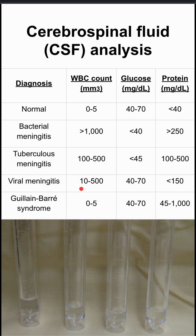In viral meningitis, your white blood cell count is high, but not nearly as high as in bacterial meningitis. Viruses don't eat glucose nearly as much as bacteria do, so your glucose levels are normal. Your protein levels are elevated maybe, but not nearly as high as in bacterial meningitis.